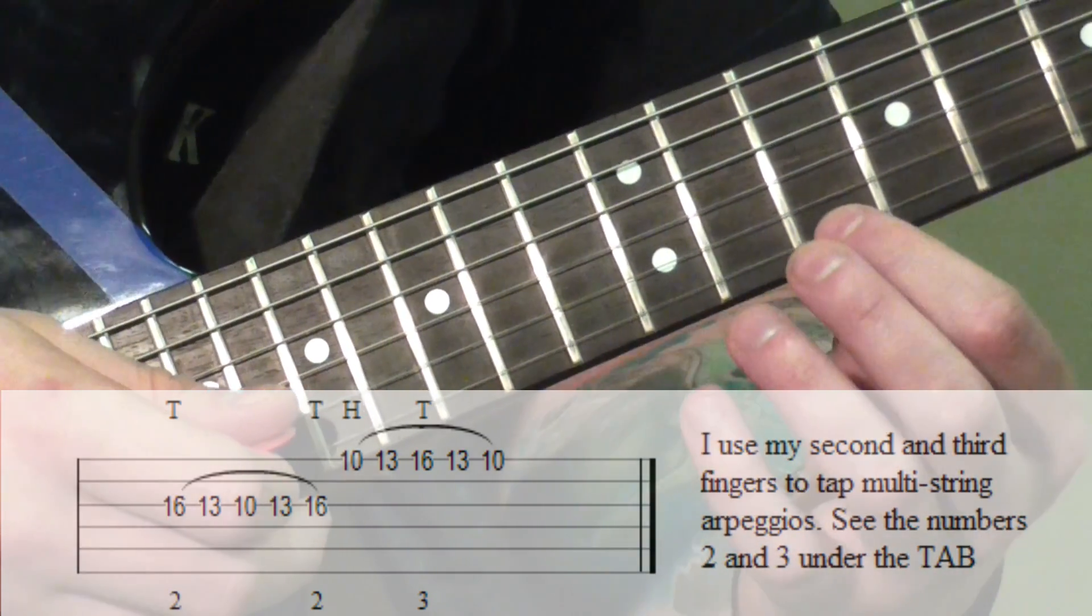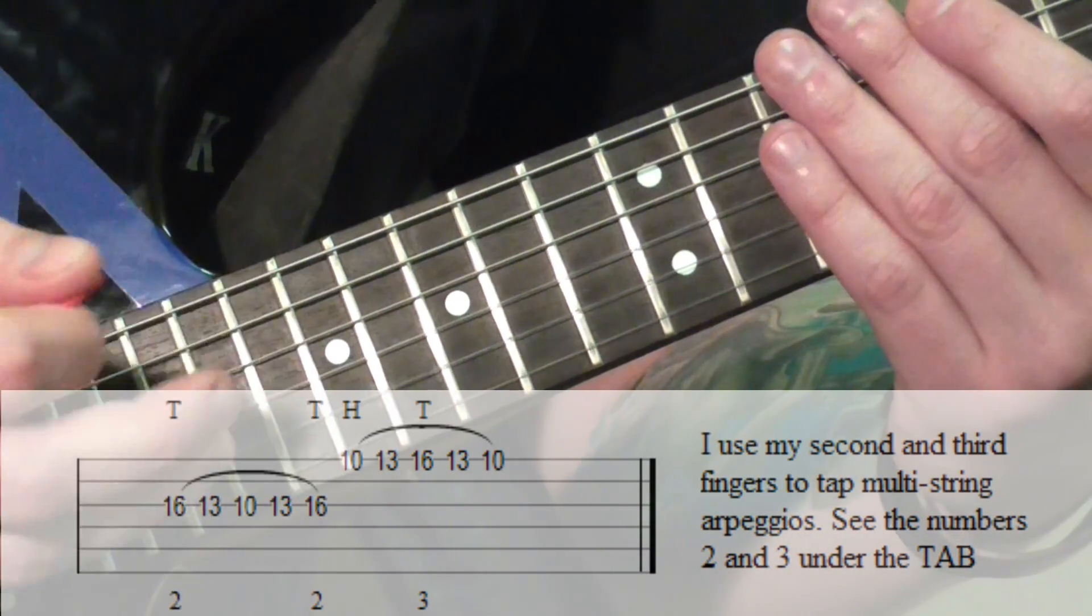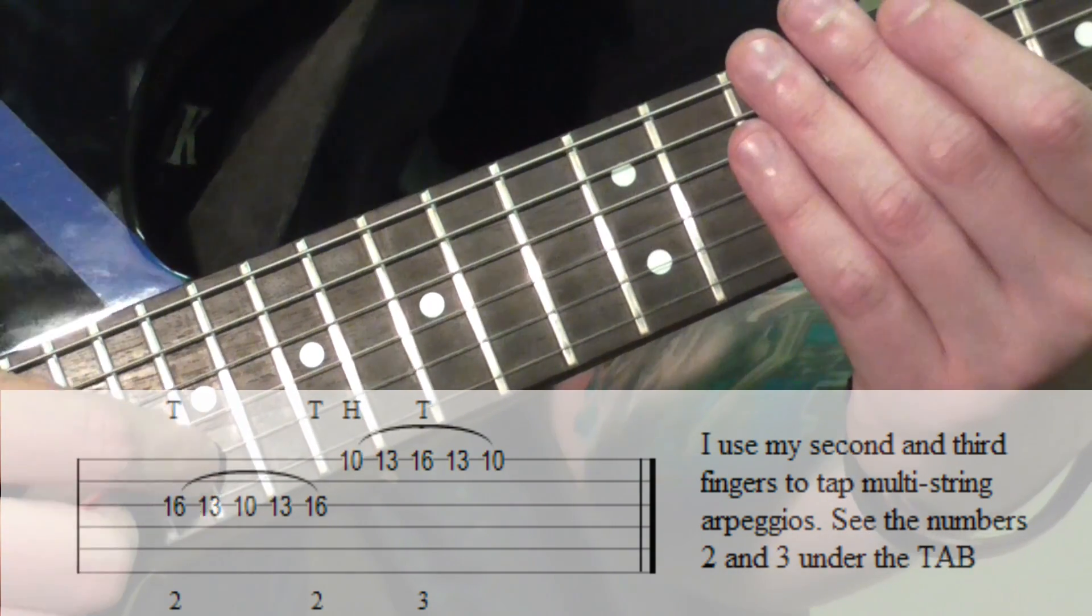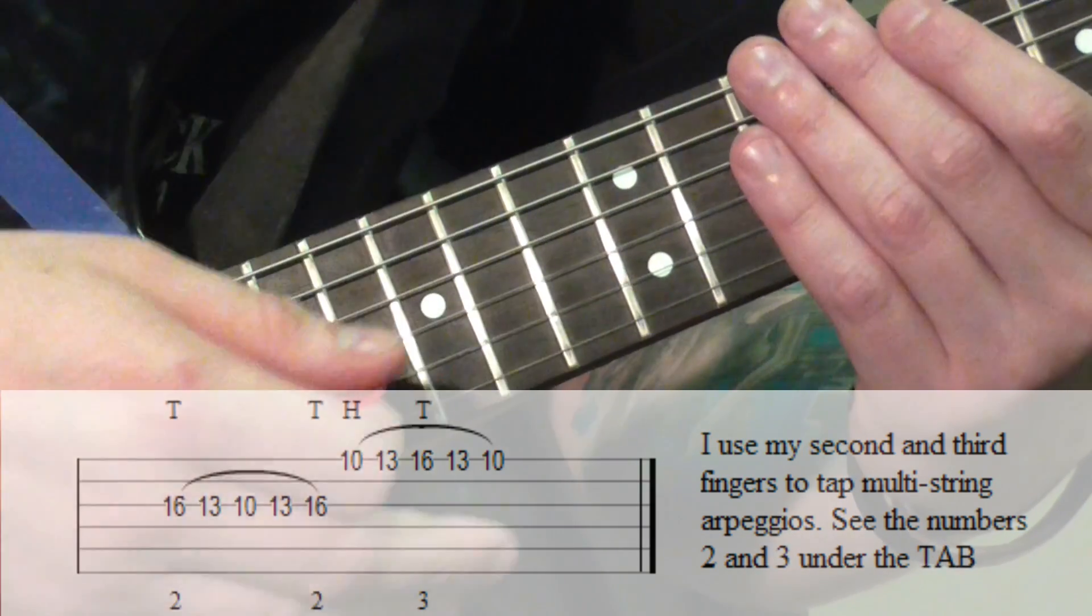Once we're successfully on to this high E string, you're going to want to move up your picking hand mute just slightly to keep the G string and the B string quiet now that you're playing on the high E.